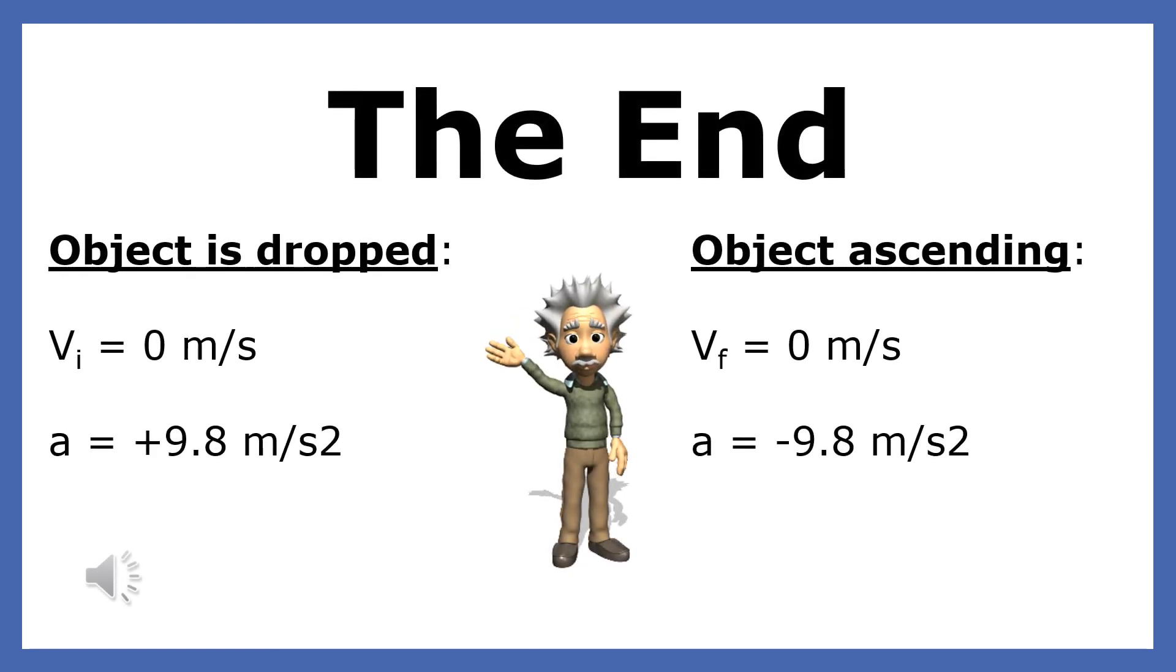When solving freefall problems, remember that when an object is dropped, the initial velocity equals zero and the acceleration is positive 9.8 meters per second squared. When an object is ascending, the peak velocity equals zero and the acceleration is negative 9.8 meters per second squared. This is the end of my presentation on solving freefall problems.